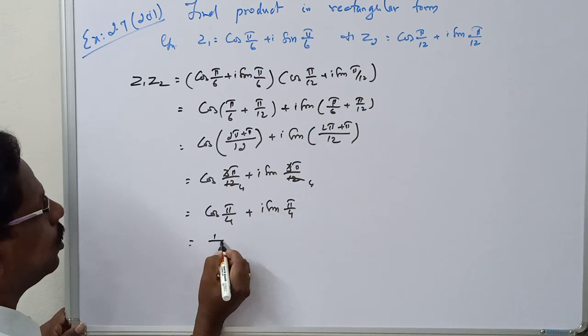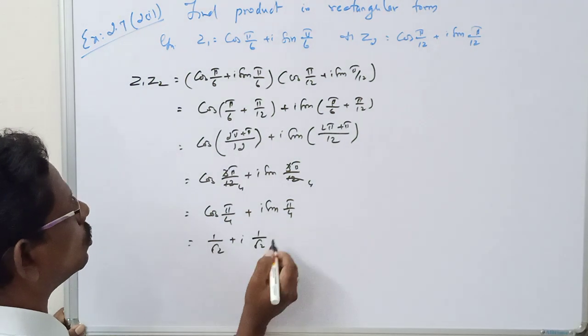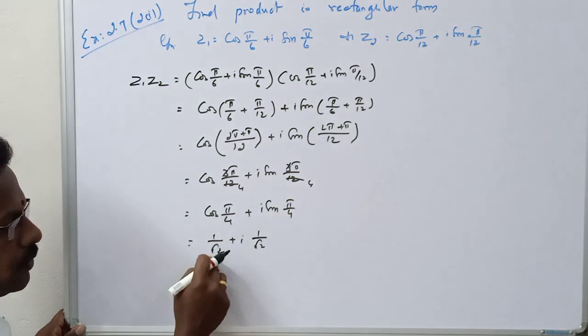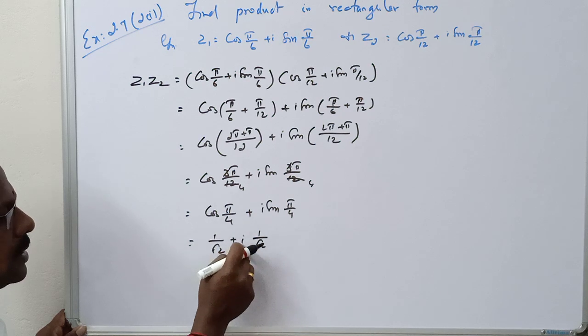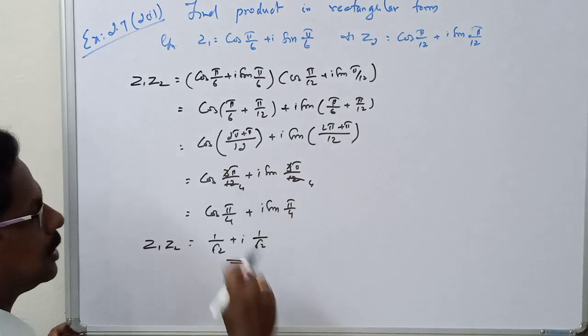What is cos π/4? 1/√2 plus i 1/√2. Cos π/4 and sin π/4 are both equal to 1/√2. So 1/√2 plus i 1/√2. This is the product in rectangular form.